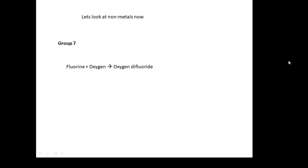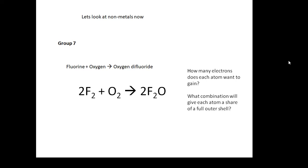Let's look at non-metals now. Let's look at group seven. So fluorine plus oxygen goes to oxygen difluoride. 2F2 plus O2 goes to 2F2O. So why F2O? Well, fluorine has got seven electrons in its outer shell, oxygen has got six. So two fluorines and an oxygen get together in a covalent bond. There's a dot and cross diagram, you should be able to draw this diagram. Two fluorines, one oxygen, sharing electrons. There's a molecule of oxygen difluoride.